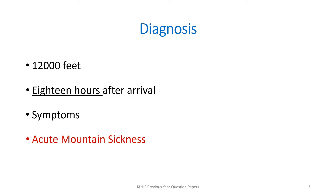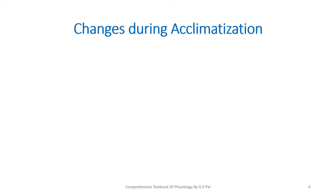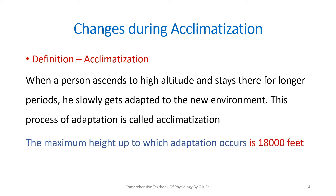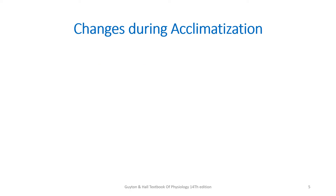When you write an answer for the diagnosis, it is always better to substantiate your answer — explain why you are saying that the diagnosis is this, as that will fetch you more marks. The second question was: what are the changes during acclimatization? You can start off with the definition of acclimatization. When a person ascends to high altitude and stays there for a longer period, he slowly gets adapted to the new environment. This process of adaptation is called acclimatization. The maximum height up to which adaptation occurs is 18,000 feet.